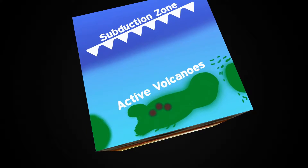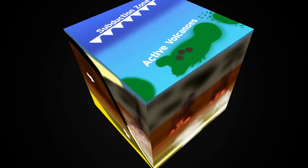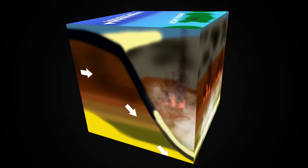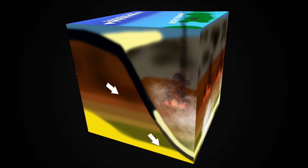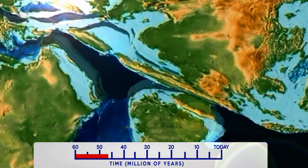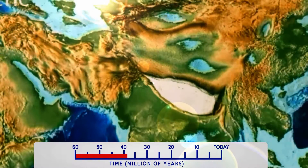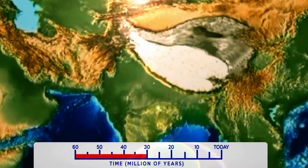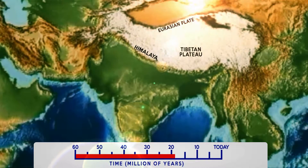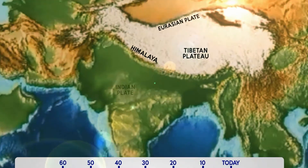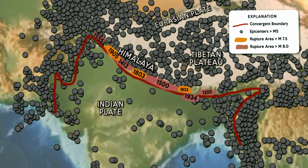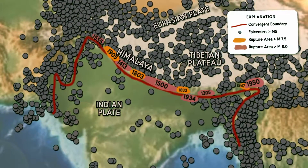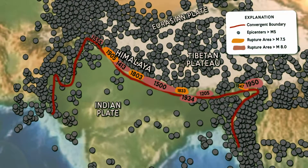Why do earthquakes take place? The theory of plate tectonics explains that earthquakes occur in response to relative plate motion and their convergence. Around 50 million years ago, the Indian plate collided with the South Eurasian plate and began constructing the Himalayas and the Tibetan plateau. Regional compression produced broadly distributed earthquakes along the Himalayan range, and historical events suggest that large earthquakes occur on the shallow portion of the megathrust boundary.